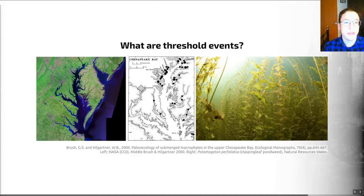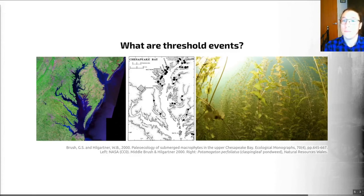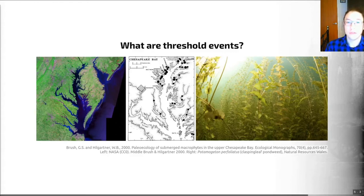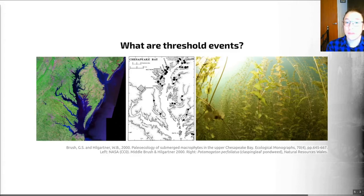A fine example is in the paper by Brush and Hilgartner published in 2000. This documents changes in species composition and abundance of submerged vegetation communities in response to human disturbance since Europeans settled in the US. They demonstrate a sudden loss of submerged aquatic vegetation in tributaries of the upper Chesapeake Bay — a bay on the east coast of the US next to Delaware. These authors used a series of cores marked by black circles on the map to understand the impacts that human stresses had on Chesapeake Bay, identifying this sudden loss of submerged vegetation in the early 1970s.